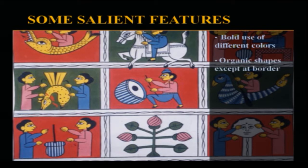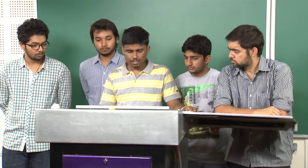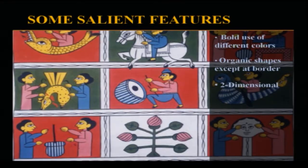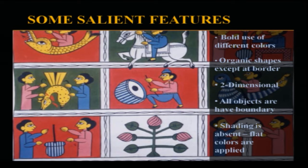Their shapes are mostly organic — even parts of the human figure and objects use rounded shapes, avoiding geometrical figures except at borders, where they use mostly simplified and decorative figures. Their paintings are generally two-dimensional; they don't show aspects of perspective or foreshortening, and all objects have a boundary — they don't merge objects or show effects of shading or lighting.